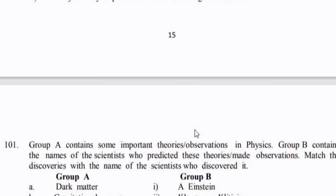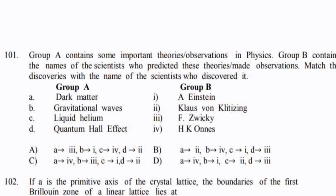Group A contains some important theories in physics; Group B contains the names of scientists who predicted these theories. Match the discoveries with the scientists who discovered them — option A.